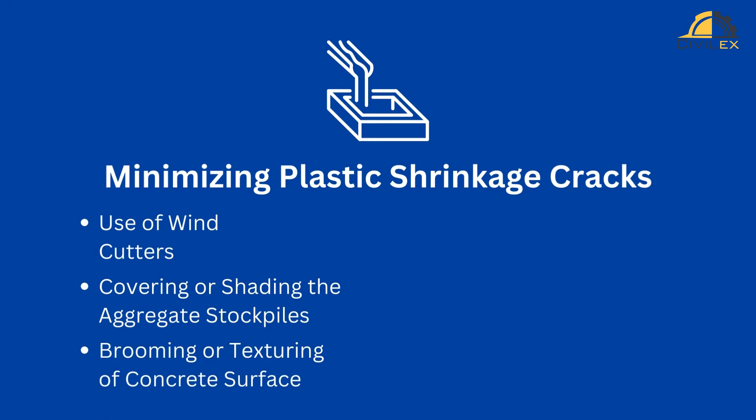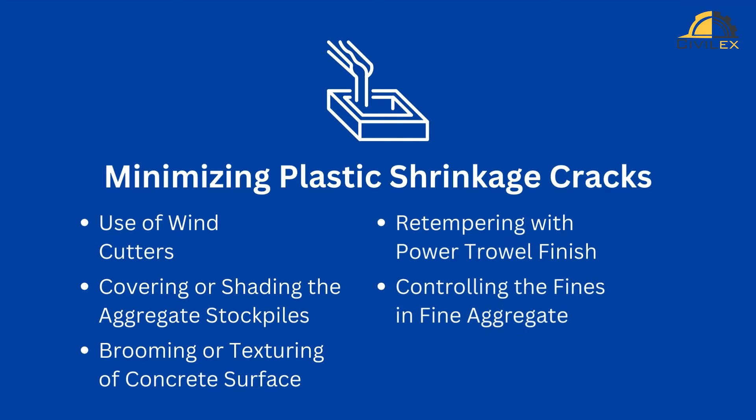3. Brooming or texturing of concrete surface — brooming or texturing the slab concrete surface during the initial set can effectively reduce crack depth and width, contributing to crack prevention. 4. Retempering with power trowel finish — giving a power trowel finish within 2–4 hours after concrete finishing helps seal any open cracks, minimizing the chances of further cracks developing. 5. Controlling the fines and fine aggregate — controlling fines and fine aggregate, especially those passing through 150 microns, is essential to reduce water demand and cracking, particularly when using crushed rock sand without air or water classifiers.